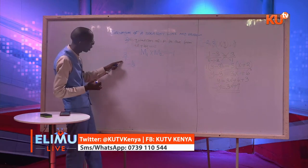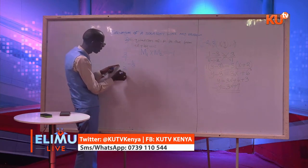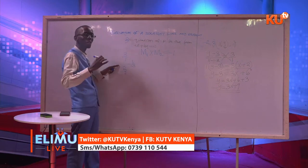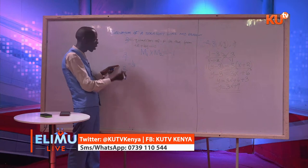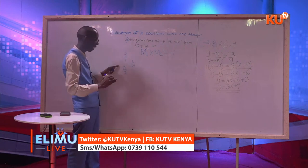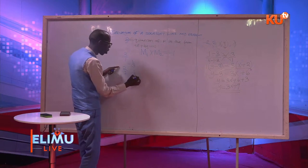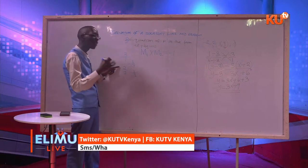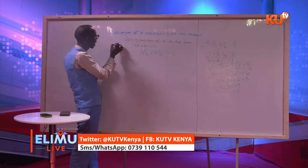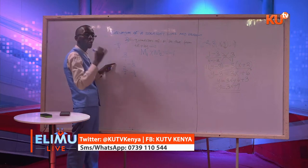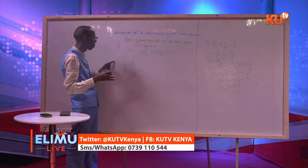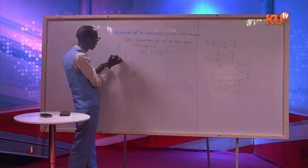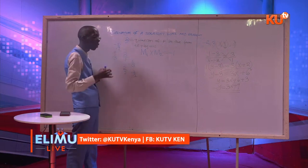My dear student, if the gradient of line 1 is 2 over 7 and you want to get the gradient of a line perpendicular to line 1, then you will reciprocate and change the sign — it will be negative 7 over 2. If the gradient of one line is negative 5 over 9 and you want to get the gradient of a line perpendicular to this one, you reciprocate and change the sign. The gradient will be 9 over 5, positive, because the original was negative.